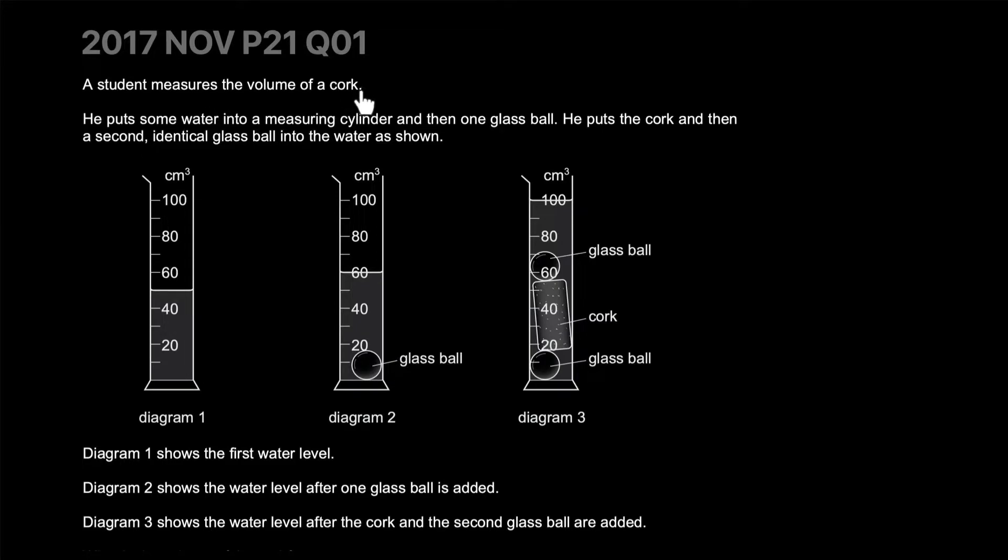A student measures the volume of a cork. He puts some water and the water level is at 50 centimeter cubed. Then he adds one glass ball which rises the level from 50 to 60, so the glass ball is 10 centimeter cubed in volume because adding it increases the volume by 10.